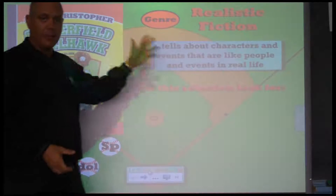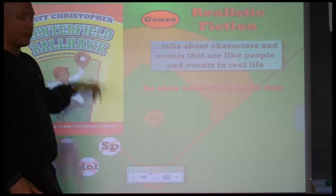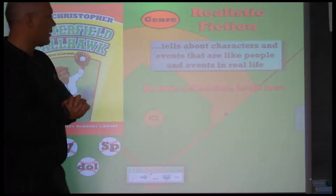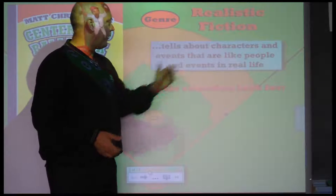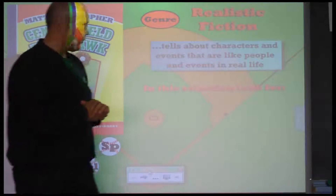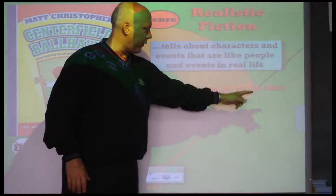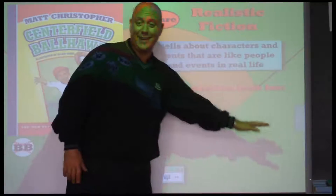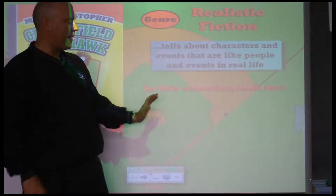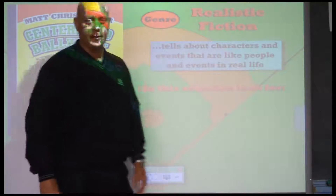As you can see, I have a title page that talks about a certain story we're going to be reading in class this week. It tells about characters and events that are like people and events in real life, explaining what type of genre story. And then it says, 'In this selection, look for,' but immediately you don't see anything. That's because I had that information hidden off to the side on a pull tab.